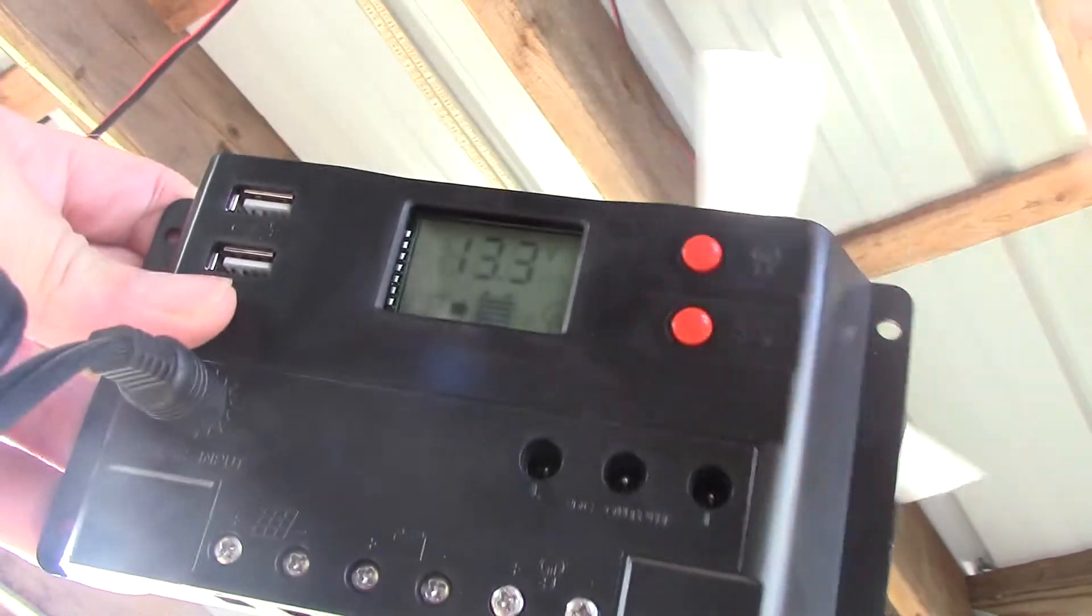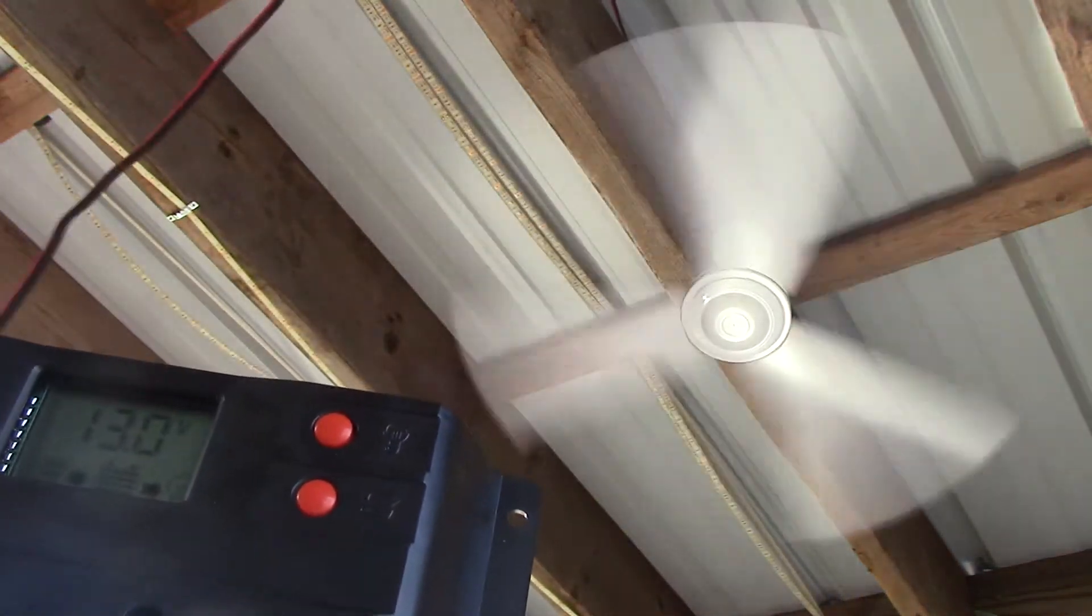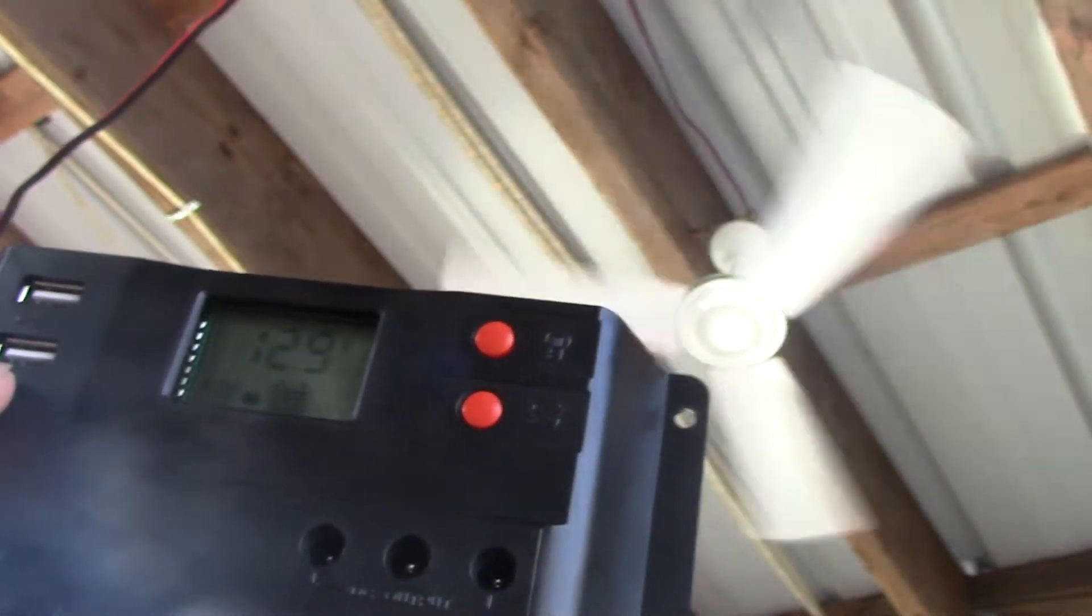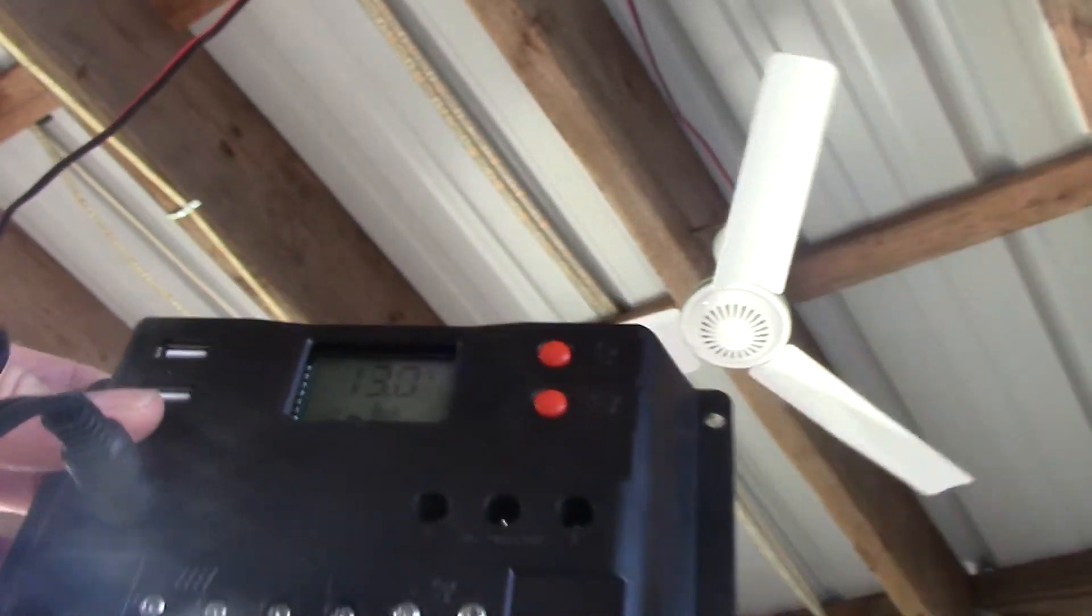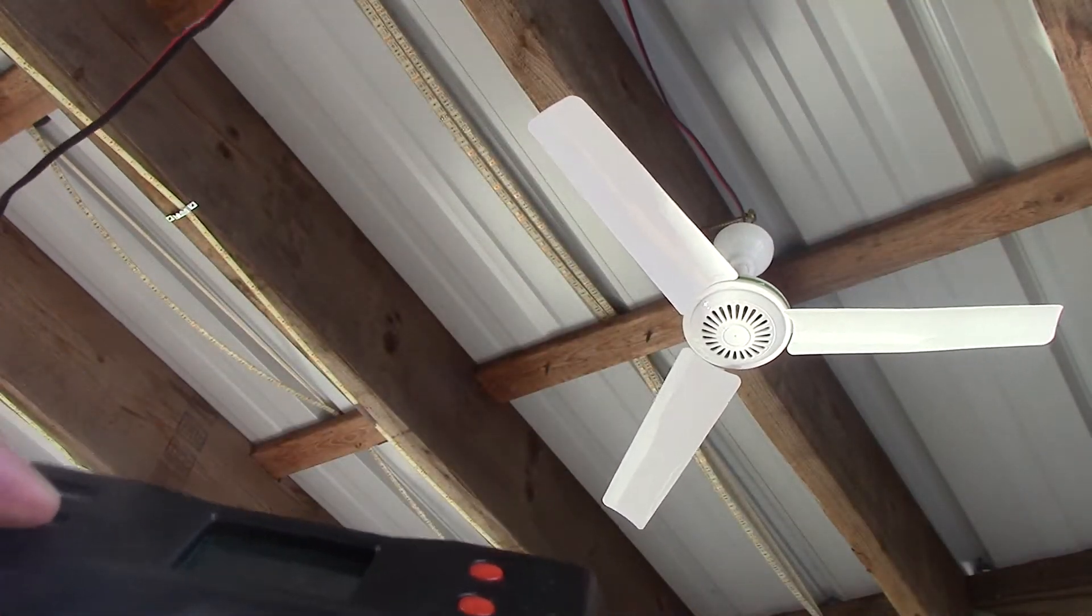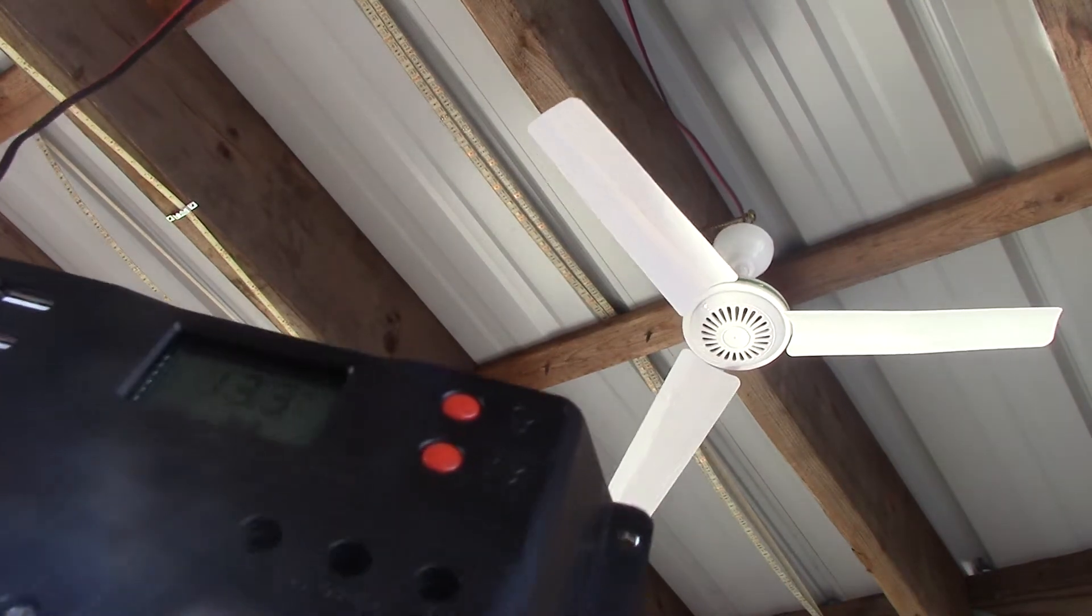Boom, on. There's our ceiling fan. And off. I would not exceed 5 amps on this Harbor Freight charge controller output. If we're running one and a quarter on that, I can run a couple of lights and maybe charge a phone max.